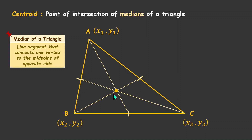Let's write it as G. There's a very special property with the centroid: the centroid always cuts the median in the ratio 2:1. So it cuts this median in the ratio 2:1, it will cut this median in the ratio 2:1, and it will also cut this median in the ratio 2:1.